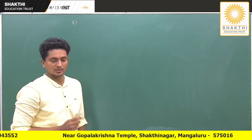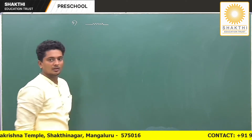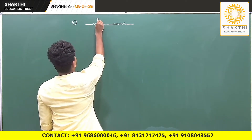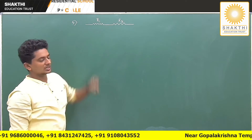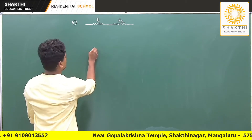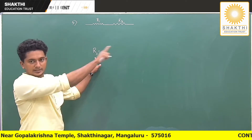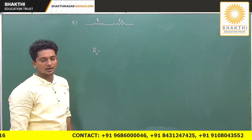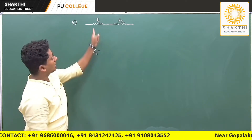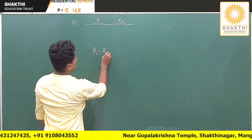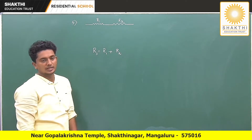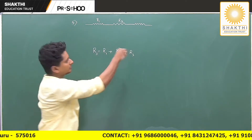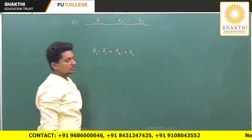Here I take two resistors — this is the symbol for a resistor — in series combination. Series means connected end to end, hand to hand. With two resistors R1 and R2 in series, the total resistance Rs = R1 + R2. You add the individual resistance values. If you have three resistors, it becomes R1 + R2 + R3, and so on.